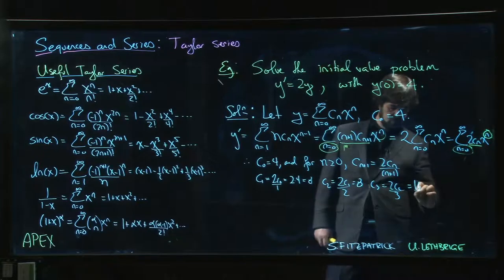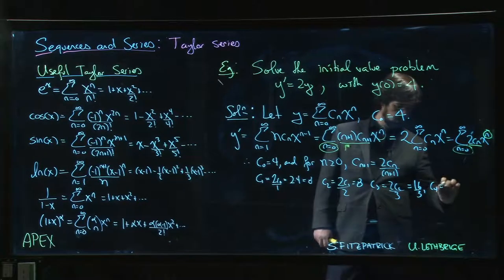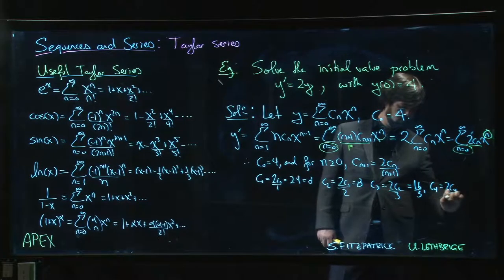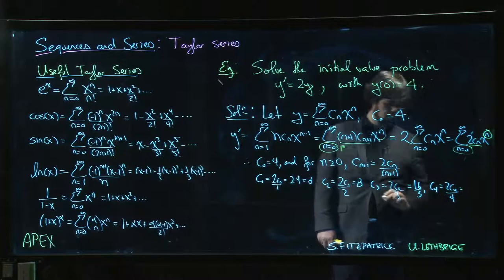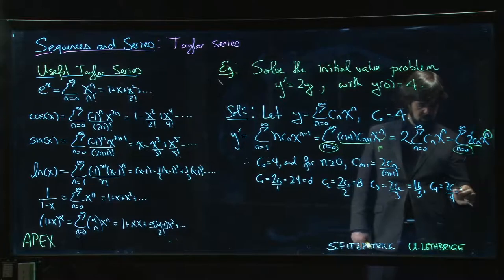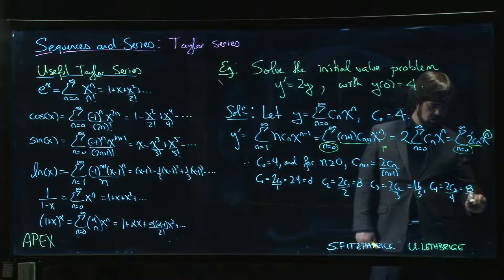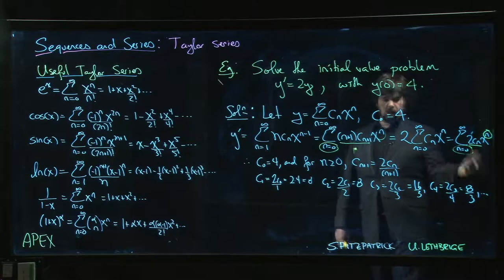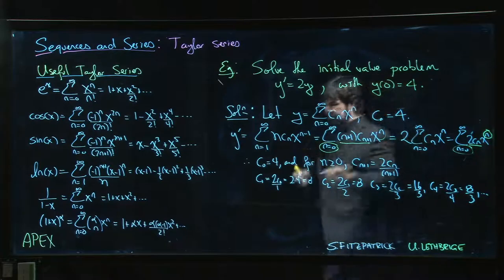c_3 I get 2 c_2 over 3, so I get 16 over 3. c_4, I get 2 c_3 over 4, so that's half of c_3, so I get 8 over 3, and so on. So I can generate all the terms. That gives me my power series, that gives me my function.